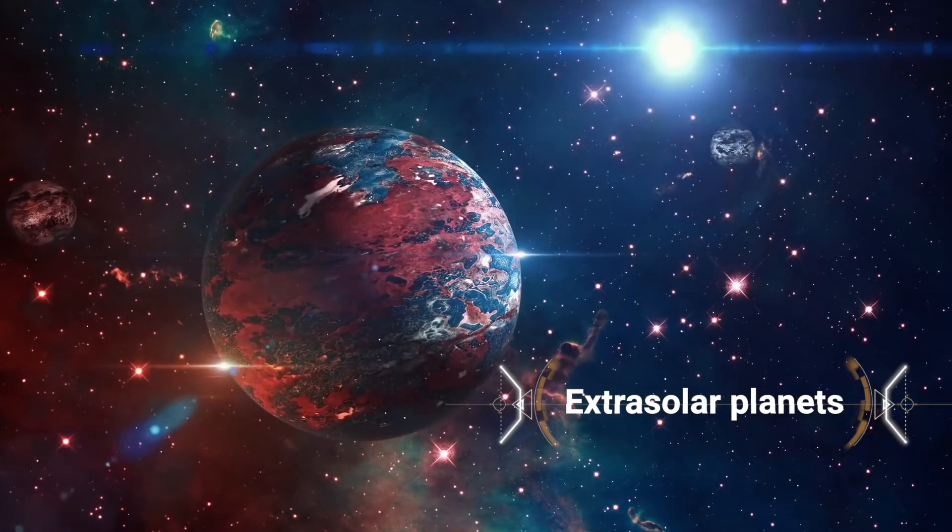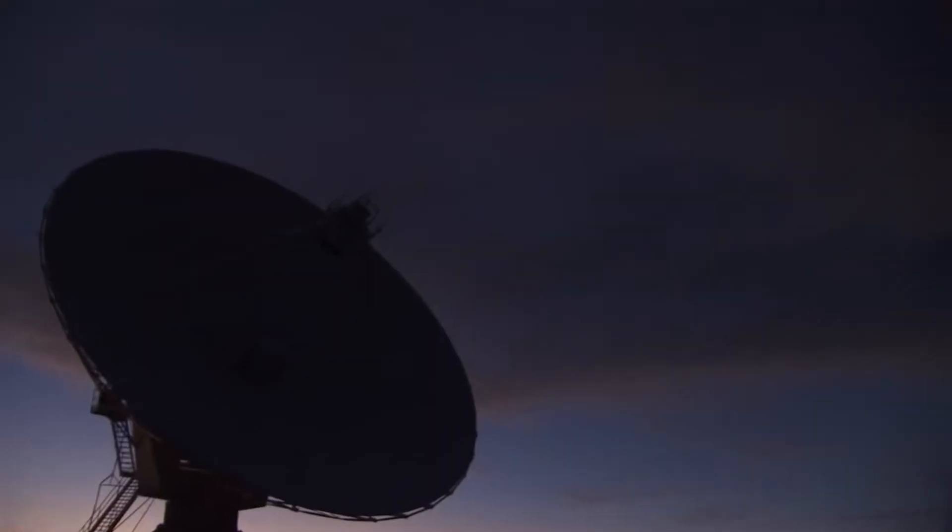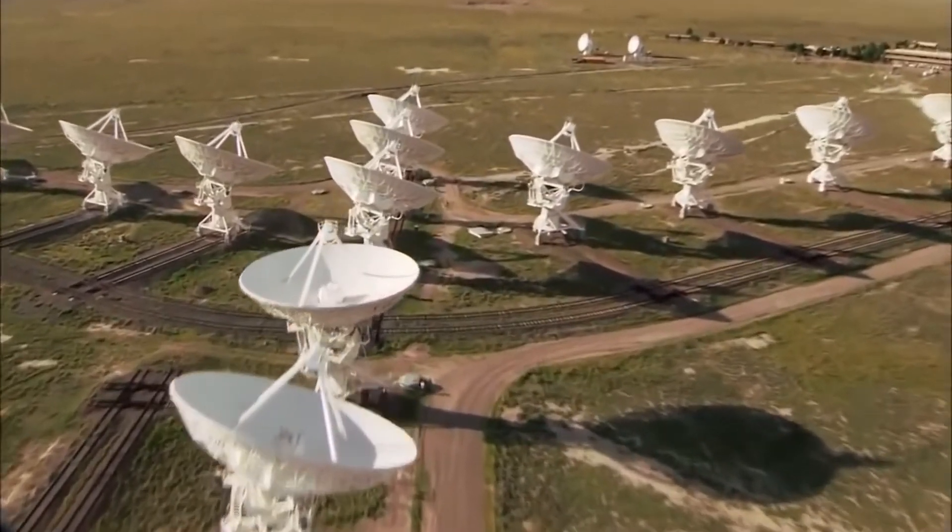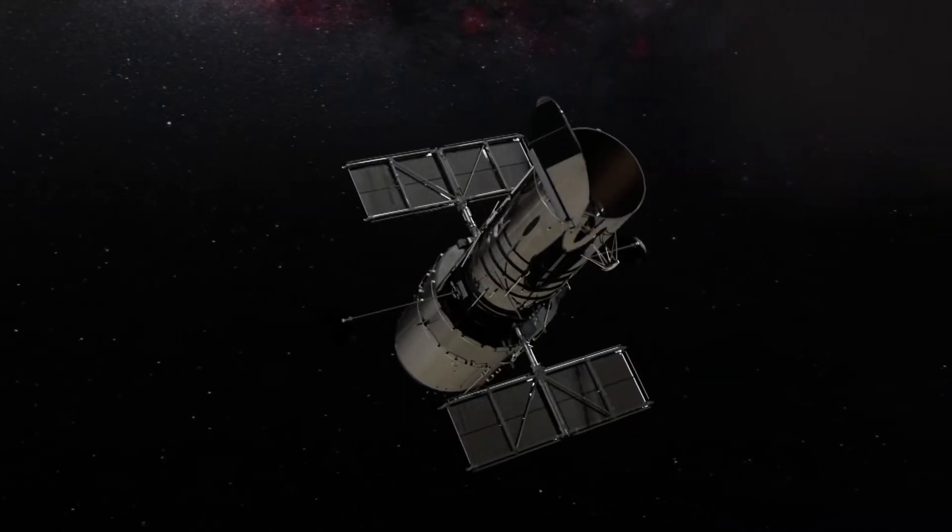Extrasolar planets, planets in orbit around stars other than our Sun, are not themselves unusual. To date, astronomers have been able to confirm nearly 5,000 such exoplanets. But the fact that an exoplanet has been detected around a star as big and as hot as Kelt 9 is unexpected.